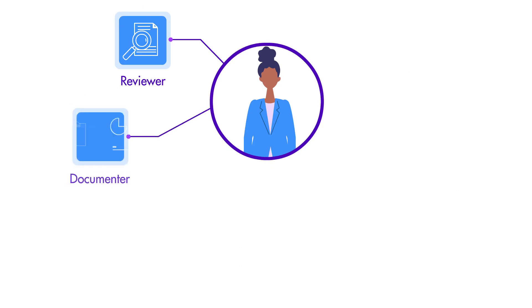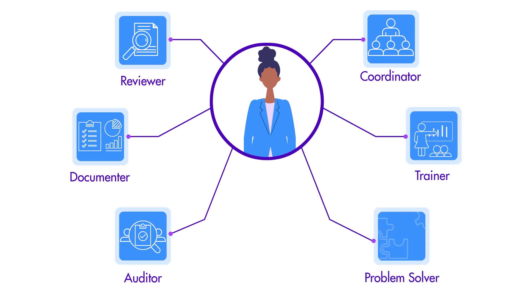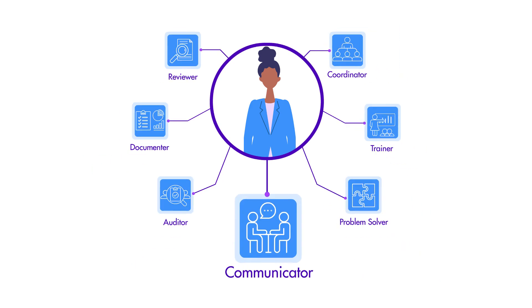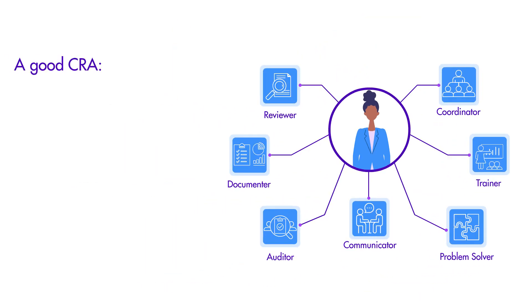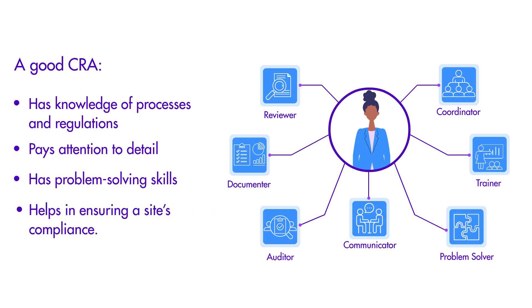As you can see, as a CRA you will need to wear multiple hats. You will need to be a reviewer, a documenter, an auditor, a coordinator, a trainer, and a problem solver. But the most important hat to wear is that of a communicator. It is what sets a great CRA apart from the good ones. All good CRAs have excellent knowledge of processes and regulations, terrific attention to detail, and impressive problem-solving skills that help a site stay compliant.